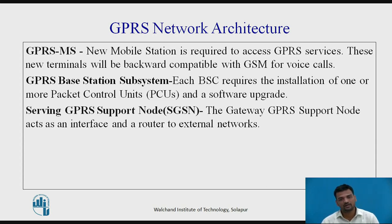When either voice or data traffic originates at the subscriber mobile, it is transported over the air interface to the base station and from there to the BSC in the same way as a standard GSM call. However, at the output of the BSC the traffic is separated: voice is sent to the Mobile Switching Center per standard GSM, and data is sent to the SGSN via the PCU over a frame relay interface.